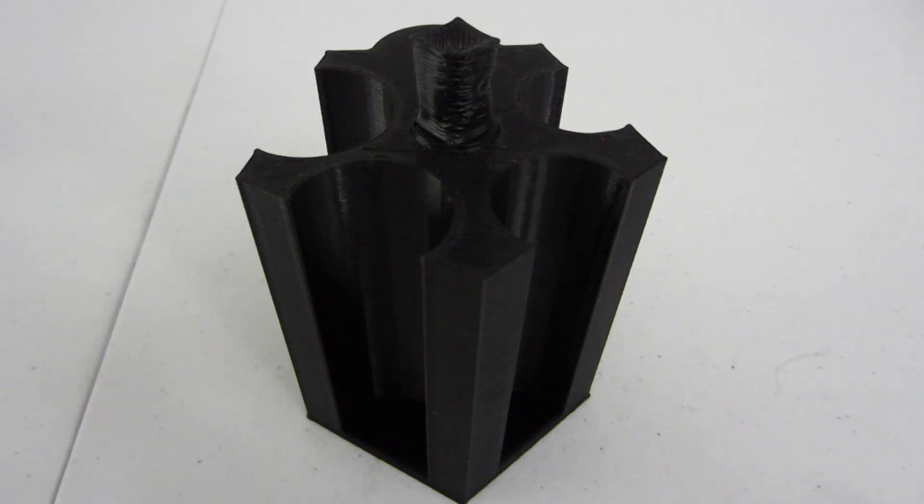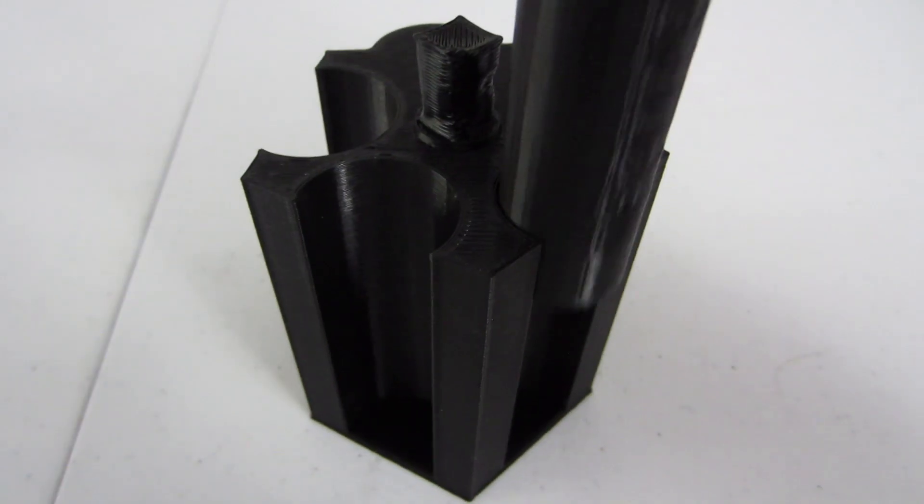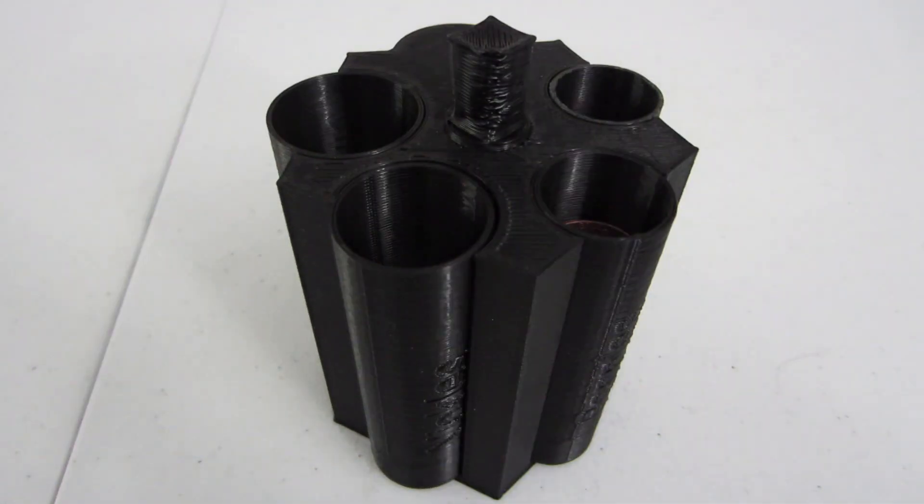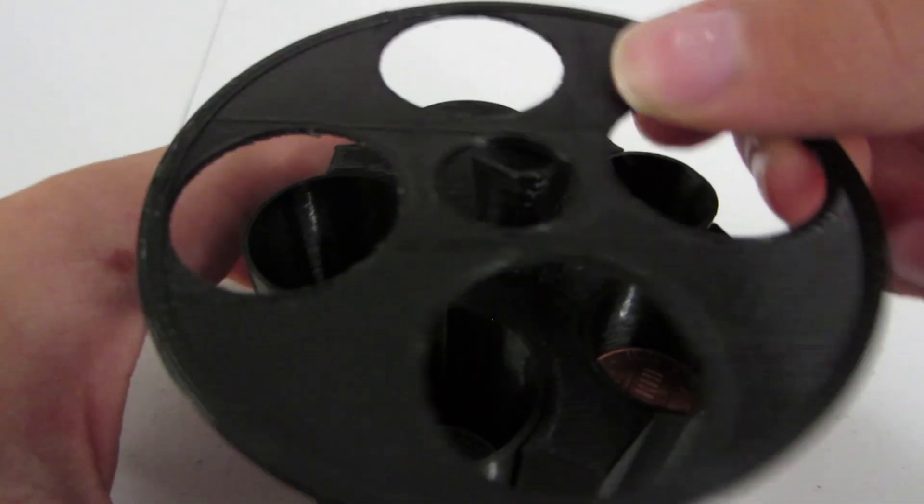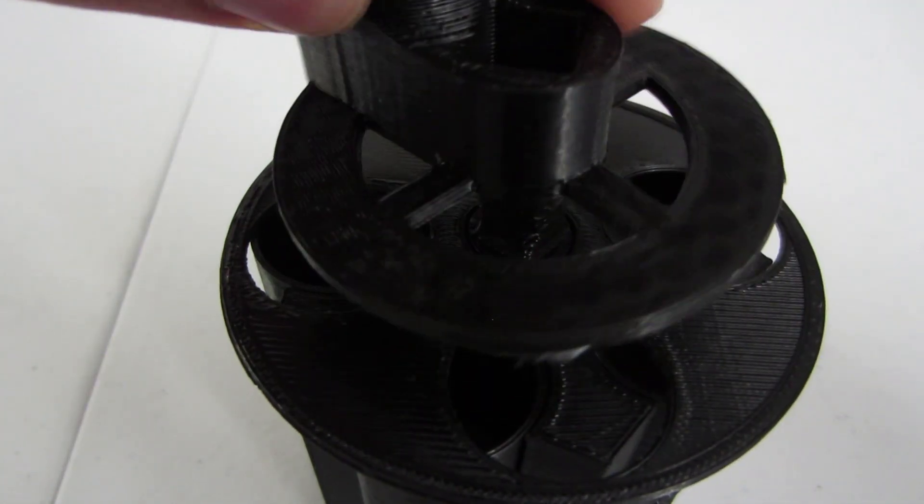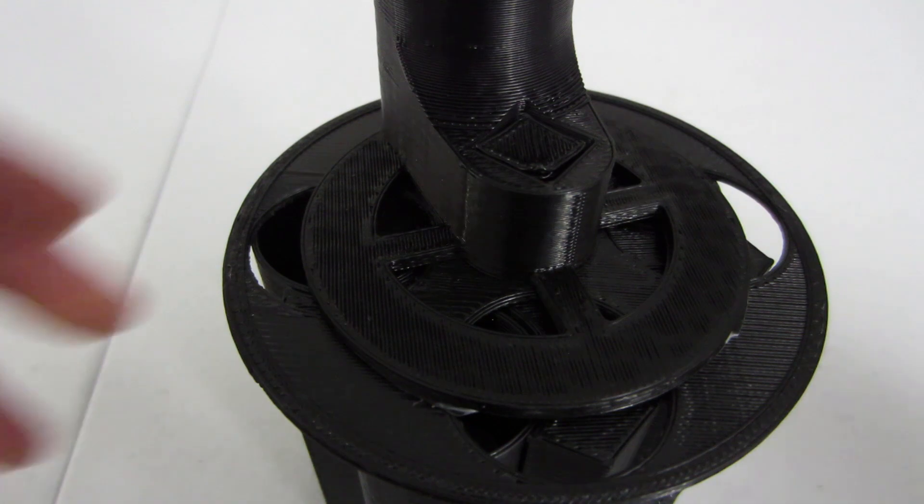All of the sleeves slide into the main holder. Once that's together you put the circular piece on top and the coin inserter on top of that.